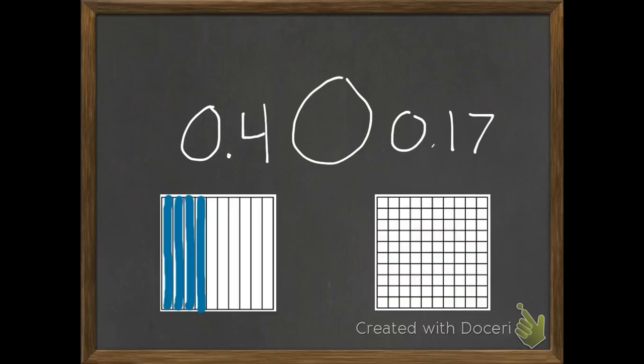Once again, I am going to draw some pictures. So there's my 4 tenths and my 17 hundredths. So those hundredths are really, really small. So even though we have 17 of them, there's little dots as opposed to the tenths that are a whole line from the top to the bottom. So my 4 tenths fills up more space than my 17 hundredths. So 4 tenths is greater than 17 hundredths.